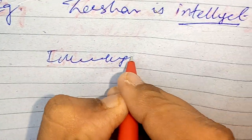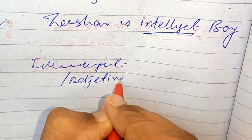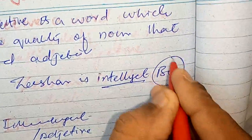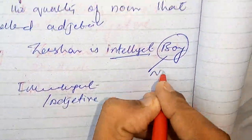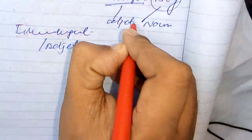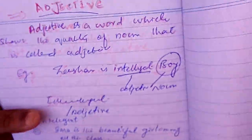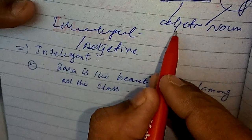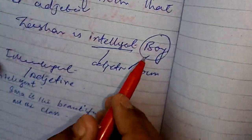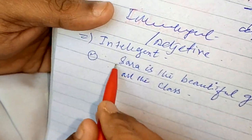Here 'intelligent' is an adjective — it shows the quality of a noun. Here 'boy' is a noun. Adhan is coming so just wait for about 2 minutes. Intelligent is an adjective which shows the quality of a boy — here 'boy' is the noun.